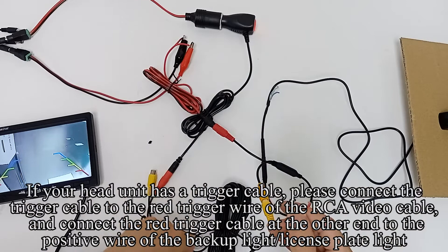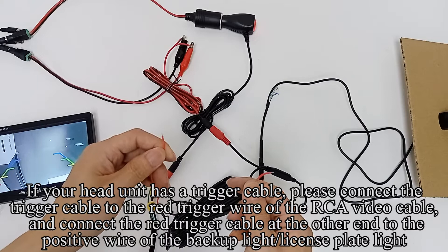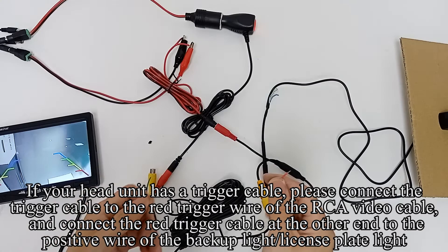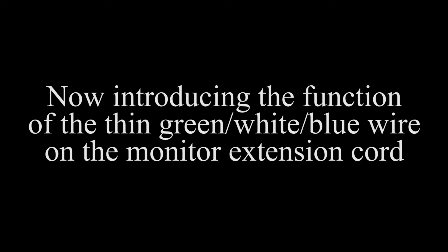There are two thin red trigger wires on the video cable. If your head unit has a trigger cable, connect the trigger cable to the red trigger wire of the RCA video cable, and connect the red trigger cable at the other end to the positive wire of the backup light or license plate light.